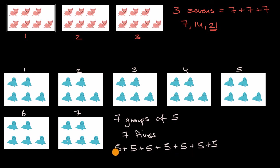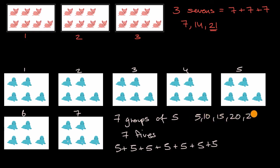And if I wanted to figure out what that is, I could skip count. I could skip count seven fives. So that would be five, ten, fifteen, twenty, twenty-five, thirty, thirty-five.